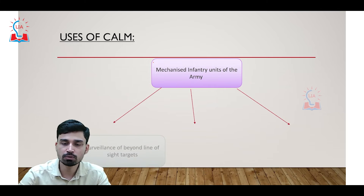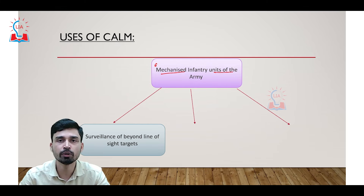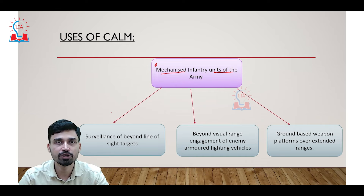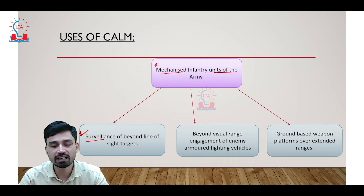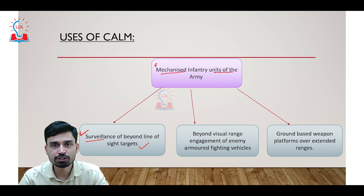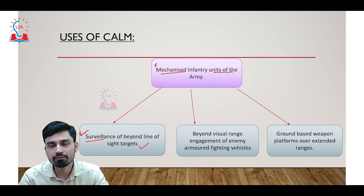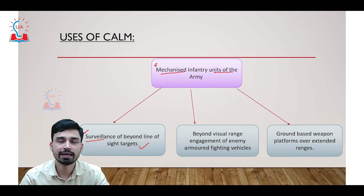The military is planning to introduce the CAM into its mechanized infantry units, where three major purposes are sought to be achieved. The first is surveillance of beyond-line-of-sight targets — those targets which are not clearly visible from any particular position. The drone fired from the CAM system will travel around those areas and provide a clear picture of the battlefield, enabling operators to make informed decisions about enemy targets.